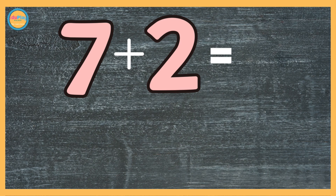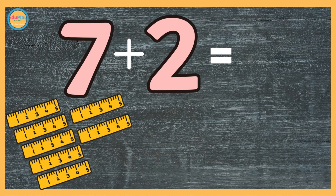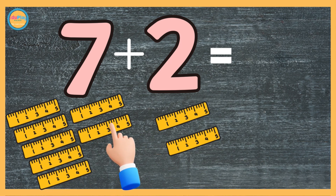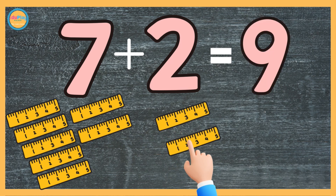7 plus 2. 1, 2, 3, 4, 5, 6, 7. 1, 2, 3, 4, 5, 6, 7, 8, 9. 7 plus 2 makes 9.